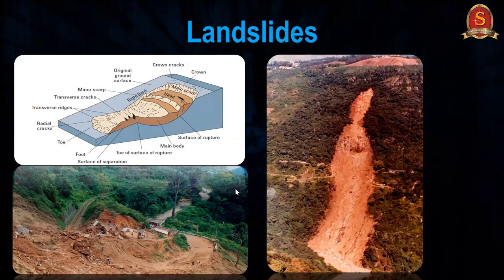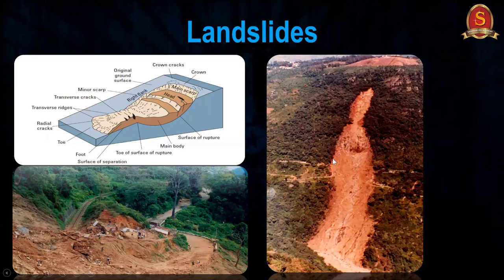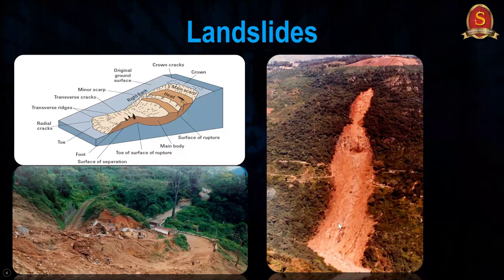The next disaster is landslide, which mainly occurs in hilly areas. Landslides in settlement areas and road cuts play a major role. If you are posted in a hilly area, be very cautious when approving new road cuts. A notable example is the Marapalam landslide in the Nilgiris, where a bus was washed away killing around 53 people. Road cuts destabilize slopes, and slopes must be maintained at the proper angle.